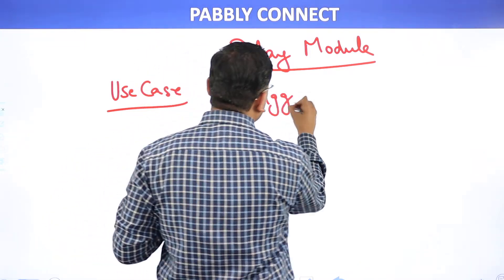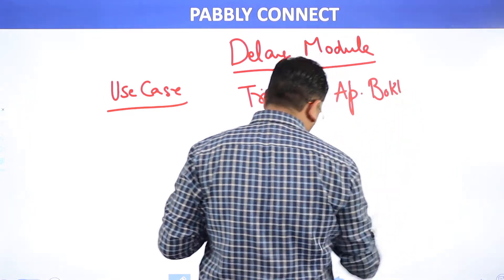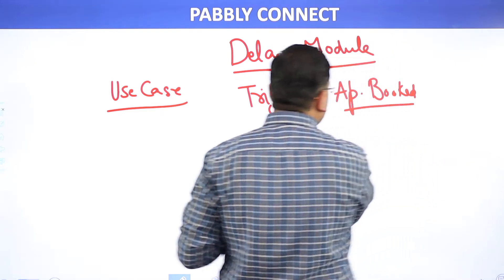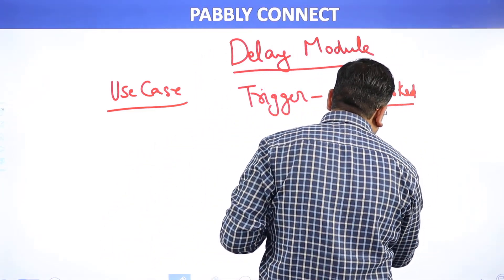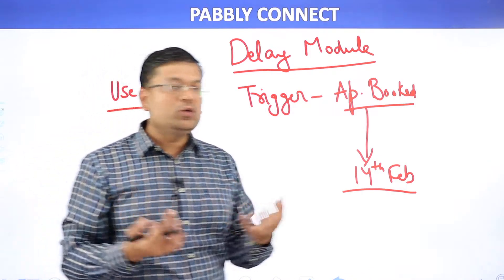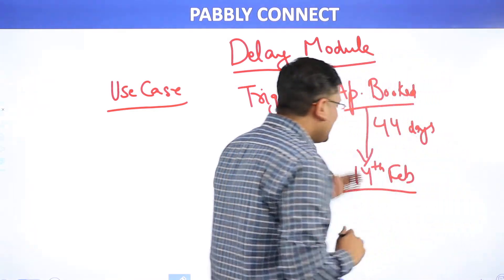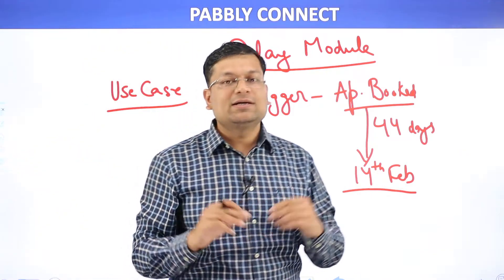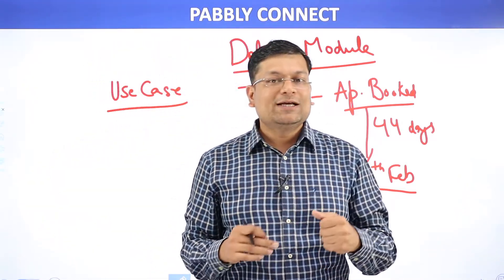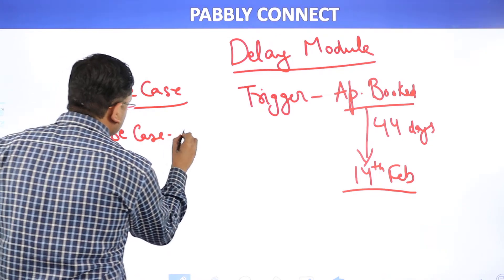So your trigger is 'appointment is booked' on 1st of January. As soon as that appointment is booked, you want to send a reminder email on 14th of February, because the 15th is the appointment date. You put a delay of 44 days until that specific email is sent to the person with whom you have booked the appointment. That's use case one.